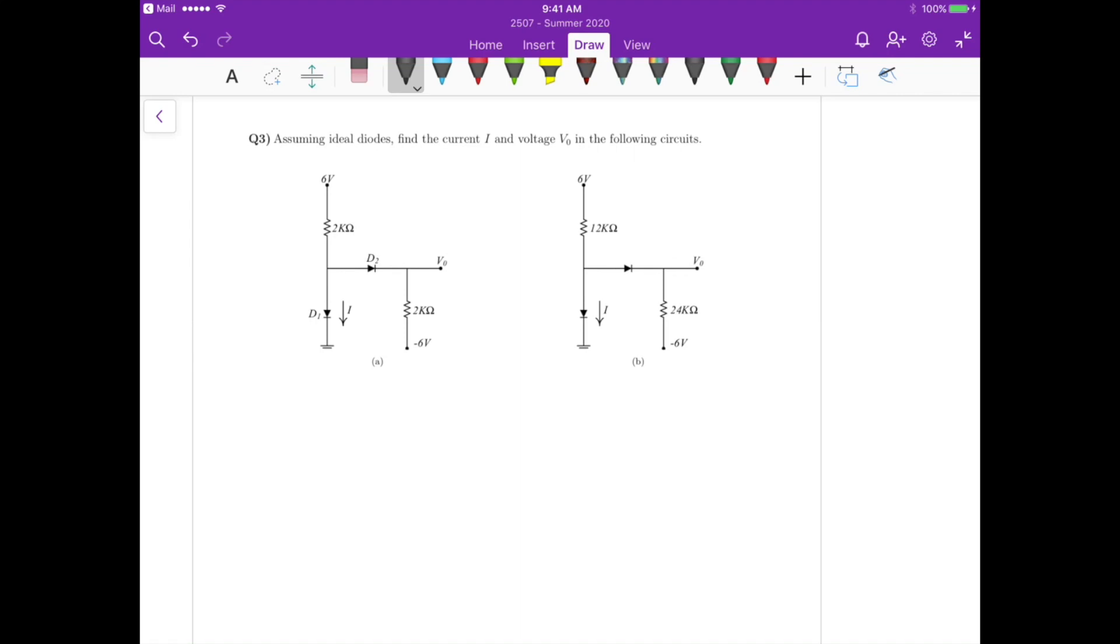Hello again, so this is question 3. So in this particular problem we have to assume ideal diodes and then find current I and voltage V0 in the following circuit.